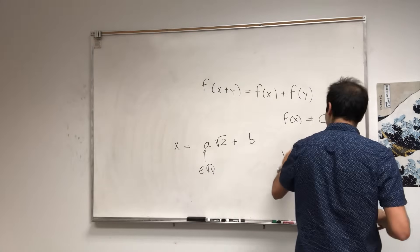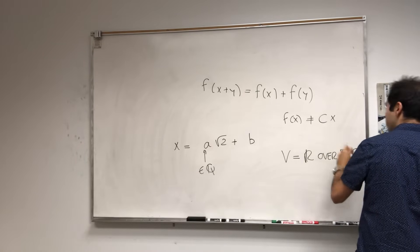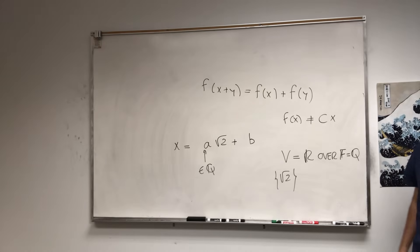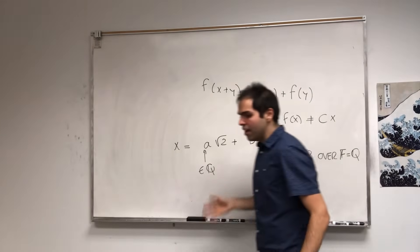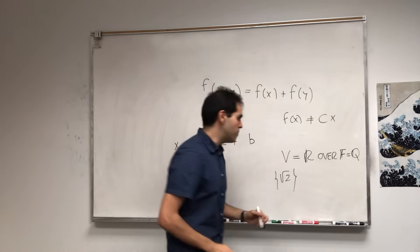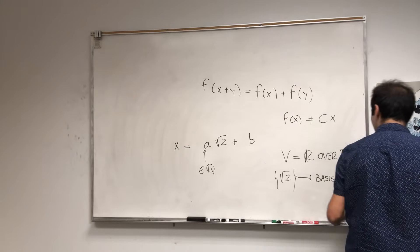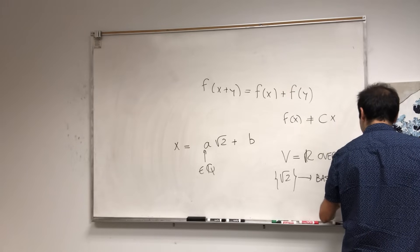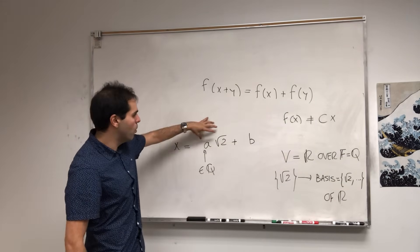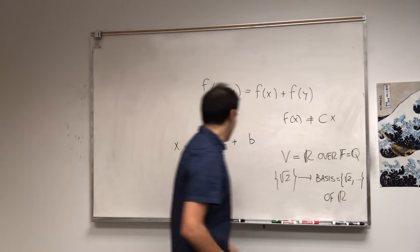More rigorously, consider the vector space of real numbers over the rational numbers, where scalars are rational. Then the set {√2} is linearly independent over ℝ. There's a fact — which I've covered in a previous video — that any linearly independent set can be extended to a basis. So extend {√2} to a basis of ℝ, starting with √2 and including any other vectors. Any real number can be written as a linear combination starting with √2 and the other basis vectors.